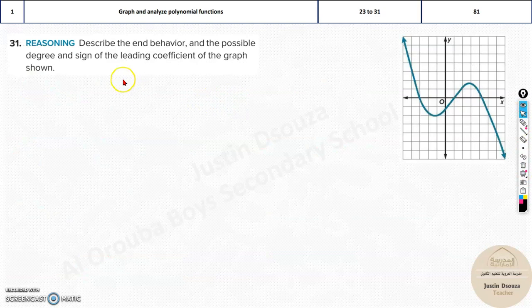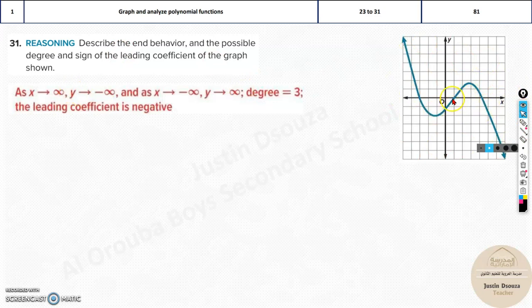Please go through the problems. And over here, we have to describe the end behaviors where the graph is given. Now, we are just looking at the graph. As x is towards, it starts with positive infinity. It's up to you. You should just see the four options. That's the main thing.